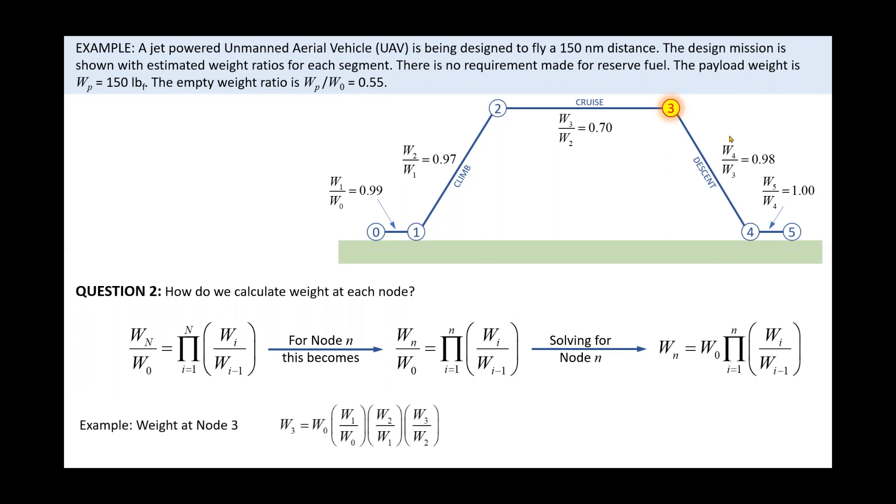Substituting the appropriate weight ratios and multiplying returns a weight of 927 pounds. Also note, the weight at each node is shown, calculated using this approach.